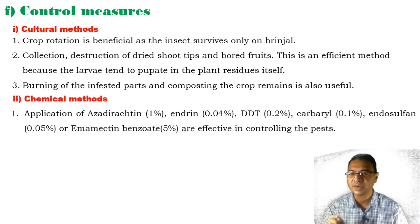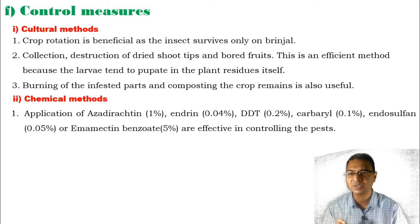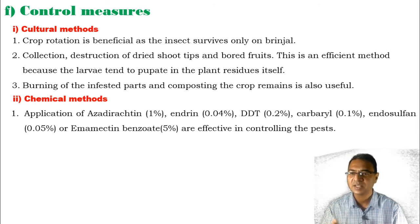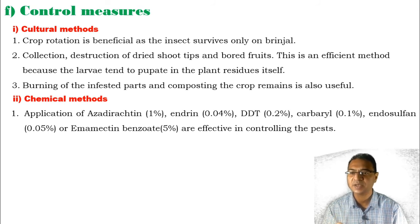After the cultural method, there is the chemical method. As the population and infestation of the pest is higher in the agriculture field, we can use certain chemicals such as Azadirachtin 1% — a natural insecticide extracted from the neem plant — Endrin 0.4%, DDT 0.2%, Carbaryl 0.1%, Endosulfan 0.5%, or Emamectin benzoate 5%.